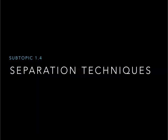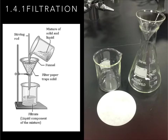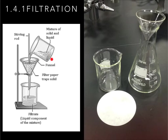Now we're going to start with different separation techniques — subtopic 1.4. First, we will discuss 1.4.1, which is about filtration. In order to do filtration, you must use a beaker, a funnel, and a filter paper. The filter paper is going to trap the big solid particles that are in the solution you're trying to separate.